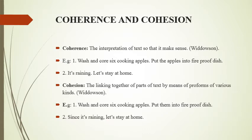Whereas cohesion is the linking together of parts of text by means of pro-forms of various kinds — meaning there are linking words which link two sentences, paragraphs, or ideas. For example, 'Wash and core six cooking apples, put them' — here 'them' is a cohesive device linking the previous sentence. Anaphora and cataphora are also kinds of cohesive devices. Similarly, 'Since it's raining, let's stay at home' — 'since' provides a linking word connecting the two parts of the sentence, making it a cohesive device.